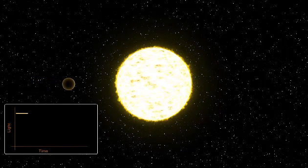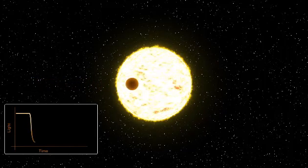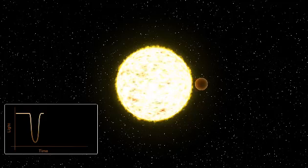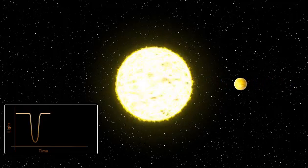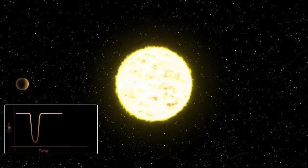The team found the planet to be smaller in size than Saturn and bigger than Neptune. Its mass is about 27 times Earth's and 6 times Earth's radius.